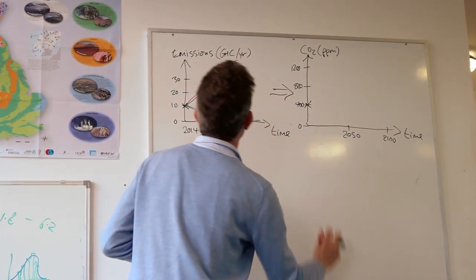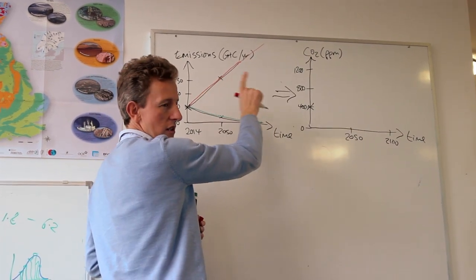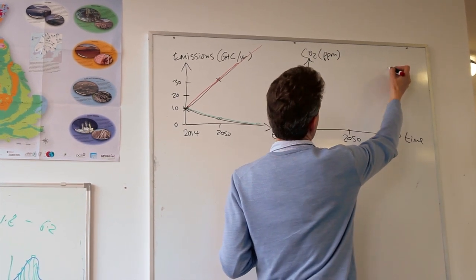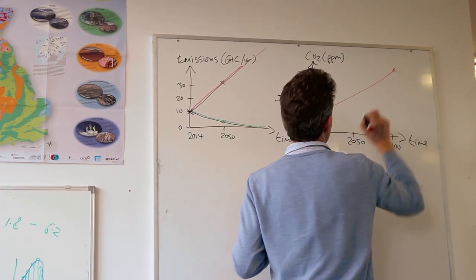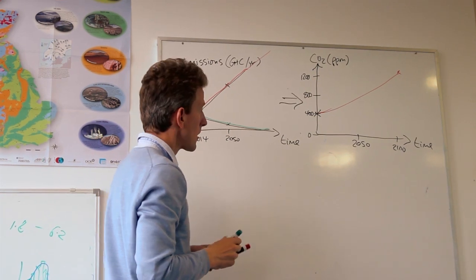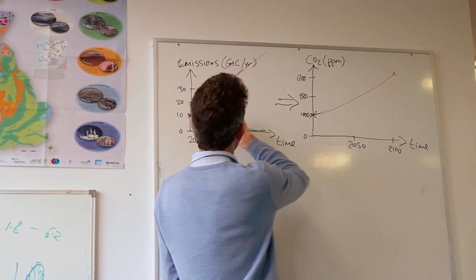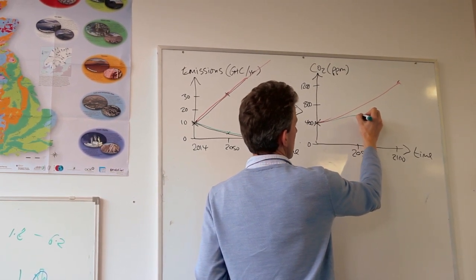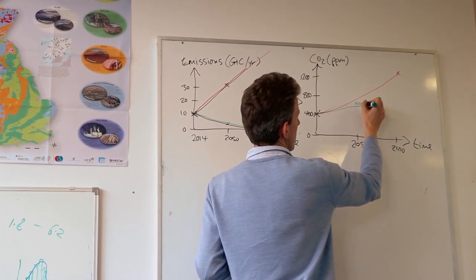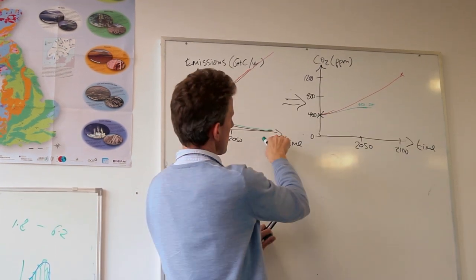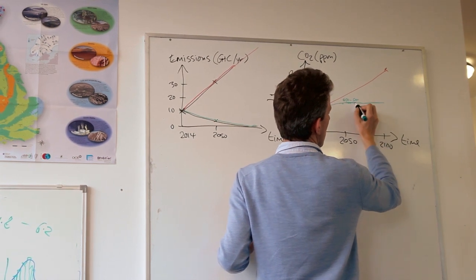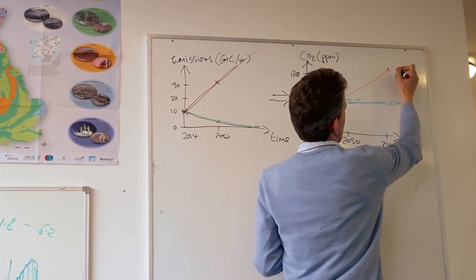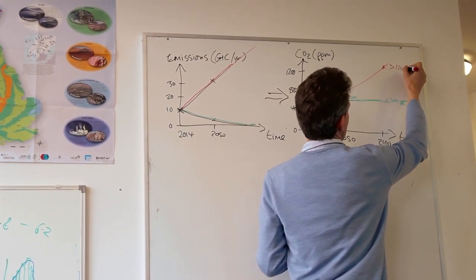Starting with the bad news: on business-as-usual, going up to 30 billion tonnes of carbon per year later this century, CO2 concentration goes up to probably over a thousand parts per million by end of century, on an upward curve. The good news trajectory will still see concentration rise to begin with - not as quickly - topping out maybe at 450 to 500 ppm. If we keep reducing emissions to zero, the concentration can stabilise hopefully at less than 500 ppm, while business-as-usual goes way past a thousand.